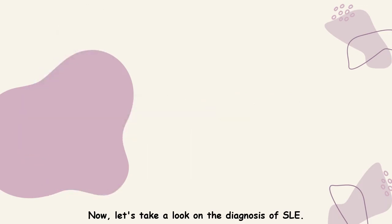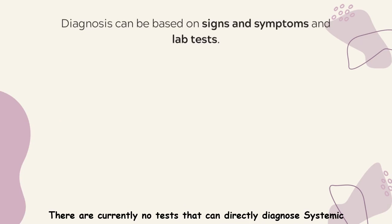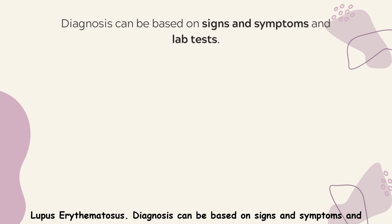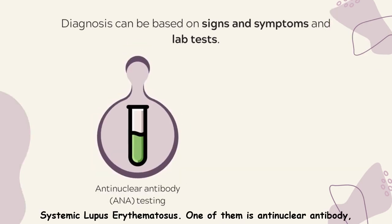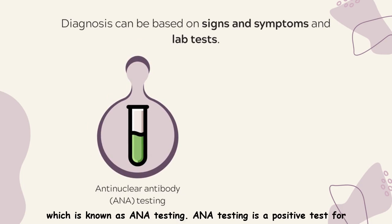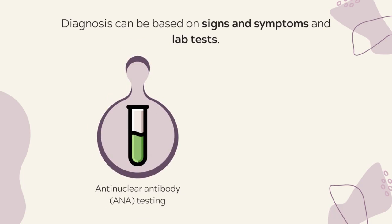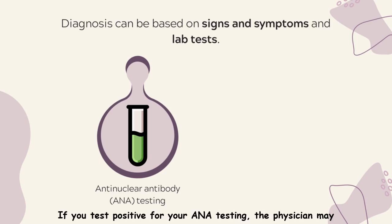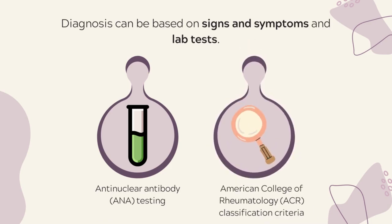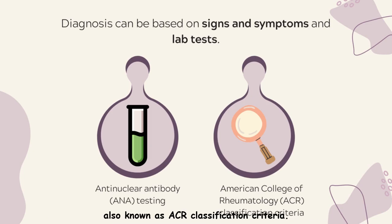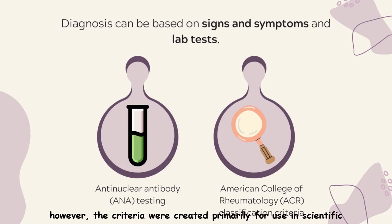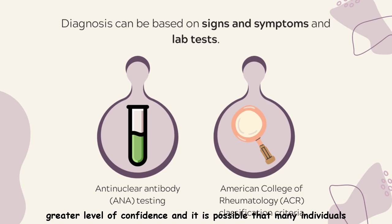Now let's take a look at the diagnosis of SLE. There are currently no tests that can directly diagnose systemic lupus erythematosus. Diagnosis is based on signs, symptoms, and lab tests. Two important diagnostic methods are used: first, anti-nuclear antibody (ANA) testing — a positive result indicates that the immune system has produced autoantibodies. If you test positive for ANA, the physician may recommend further antibody testing. Second, the American College of Rheumatology (ACR) classification criteria are used by some doctors to reach a diagnosis. However, the criteria were created primarily for scientific research, particularly randomized control trials, and it is possible that many individuals with SLE do not meet all criteria.